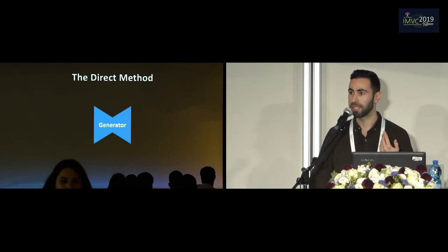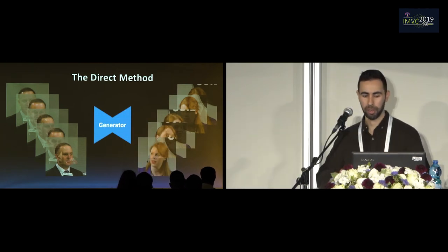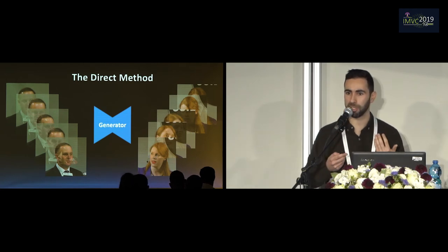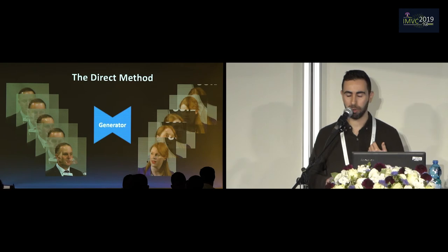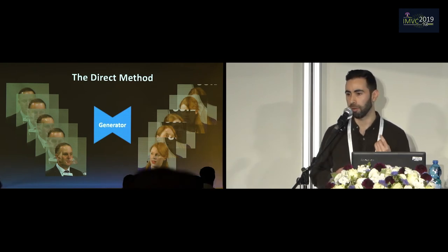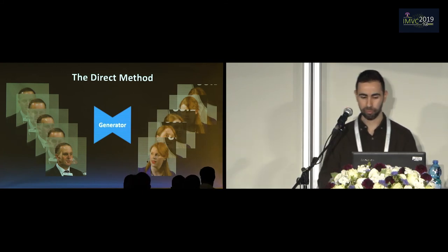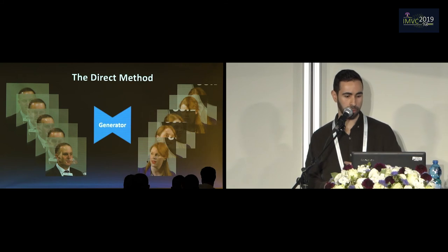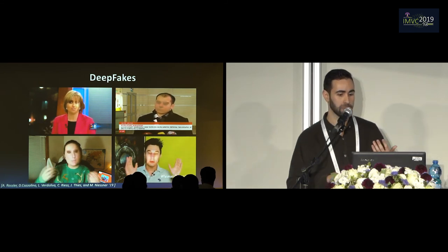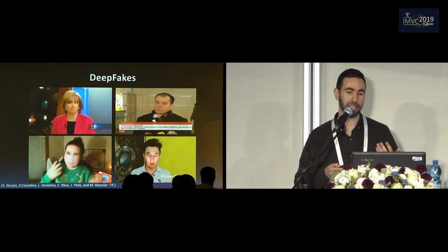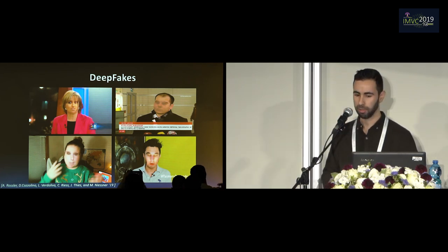The last method I'm going to talk about I call the direct method. In this method, we train a direct mapping from images of the source subject to images of the target subject without paired examples. We can use, for instance, cycle consistency loss proposed by CycleGAN. One example of this is deepfakes. The problem with deepfakes is that if you don't have enough data of each of the subjects, you will get very distorted results.